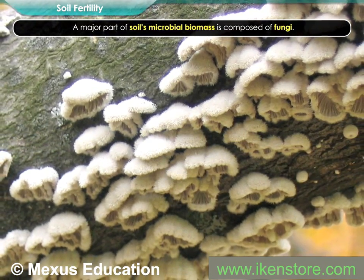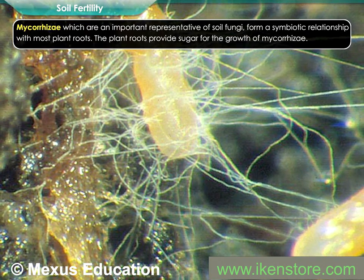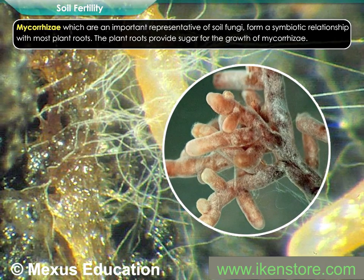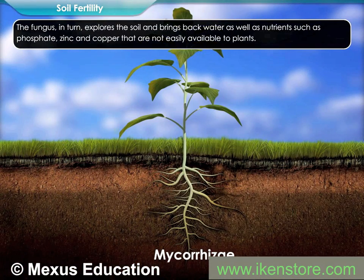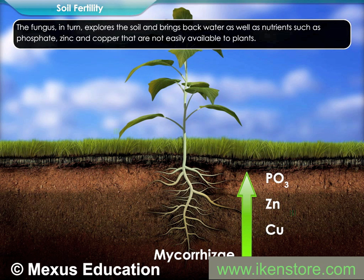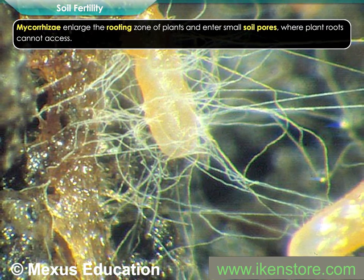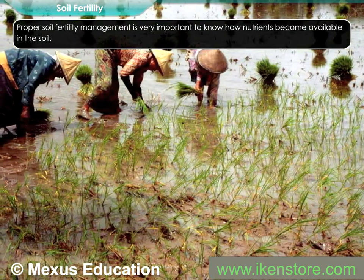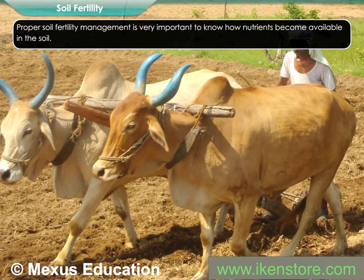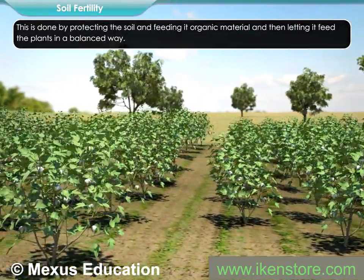A major part of soil's microbial biomass is composed of fungi. Mycorrhizae, which are an important representative of soil fungi, form a symbiotic relationship with most plant roots. The plant roots provide sugar for the growth of mycorrhizae. The fungus in turn explores the soil and brings back water as well as nutrients such as phosphate, zinc, and copper that are not easily available to plants. Mycorrhizae enlarge the rooting zone of plants and enter small soil pores where plant roots cannot access. Proper soil fertility management is very important to know how nutrients become available in the soil. This is done by protecting the soil and feeding it organic material, and then letting it feed the plants in a balanced way.